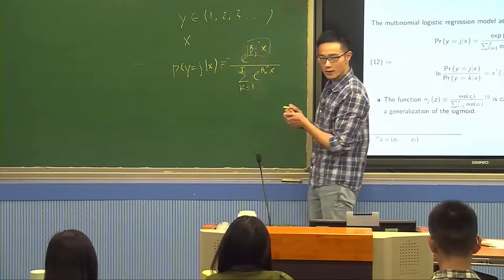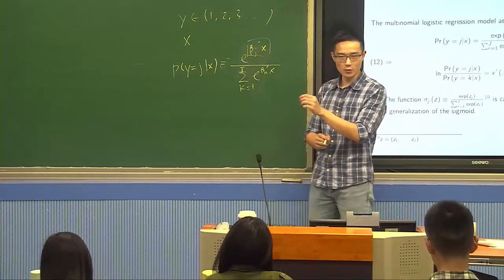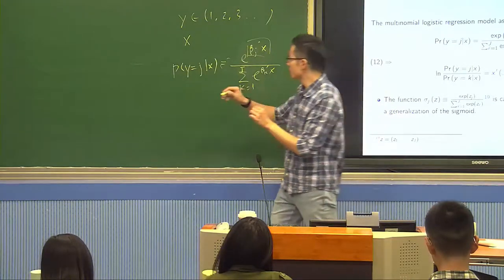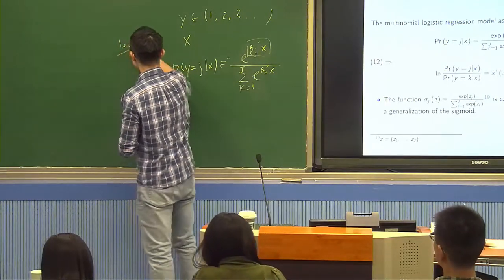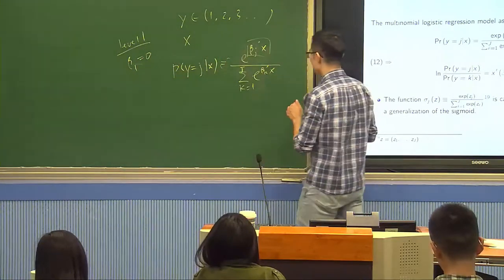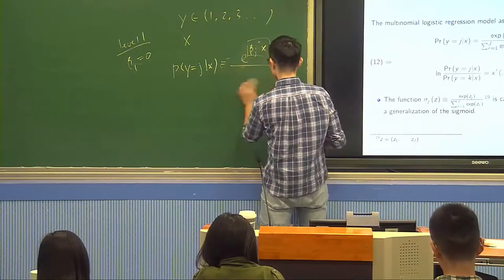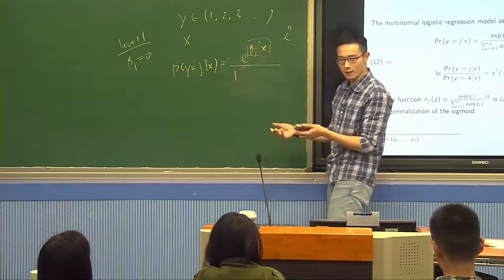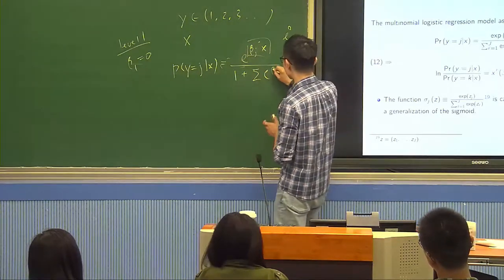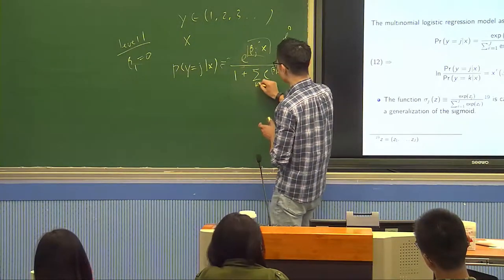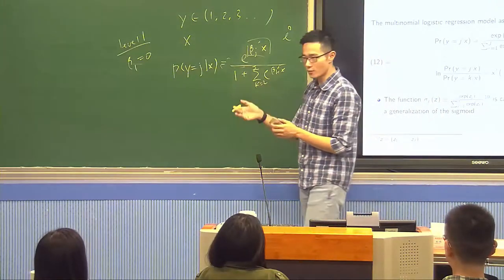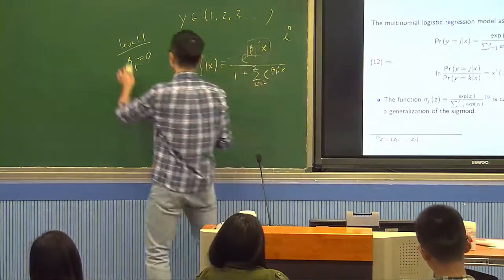There's one thing further we need to add: we should always normalize by taking one level as a reference level and making that beta j equal to 0. So suppose level 1 is the reference. Then beta 1 equals 0, and e to the 0 is 1. So 1 is always the reference level, plus the sum of e to the beta k prime x, where k goes from 2 to the big J.